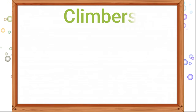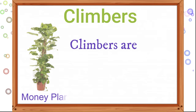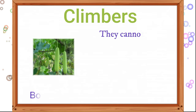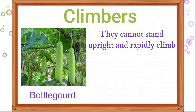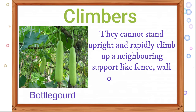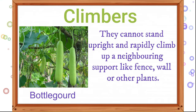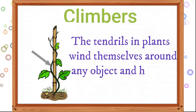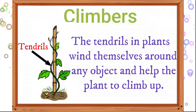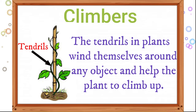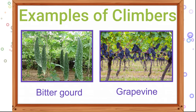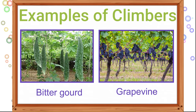The last type of plant is climbers. Climbers are plants with thin and weak stems. They cannot stand upright and rapidly climb up a neighboring support like a fence, wall, or other plants. The tendrils of plants wind themselves around any object and help the plant to climb up. Examples of climbers are bitter gourd and grape vine.